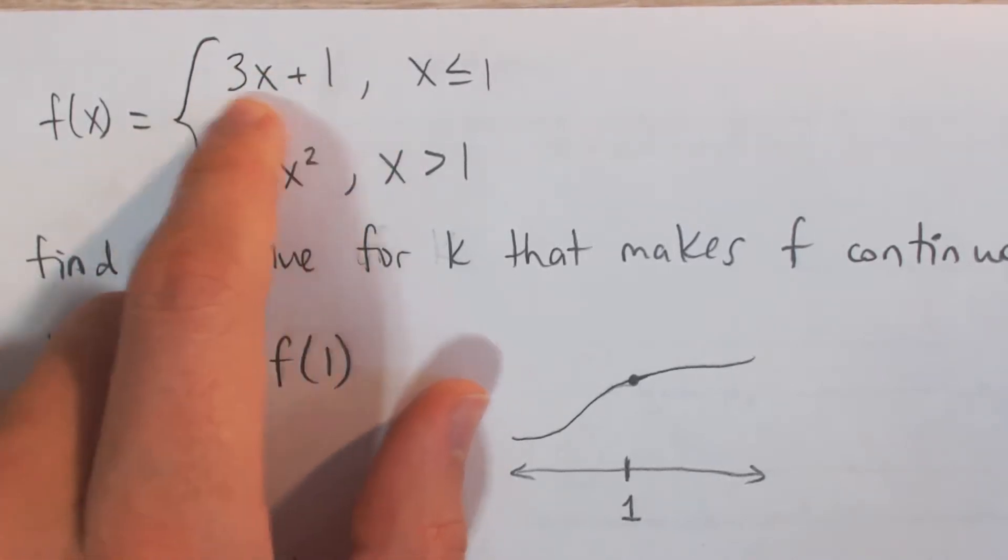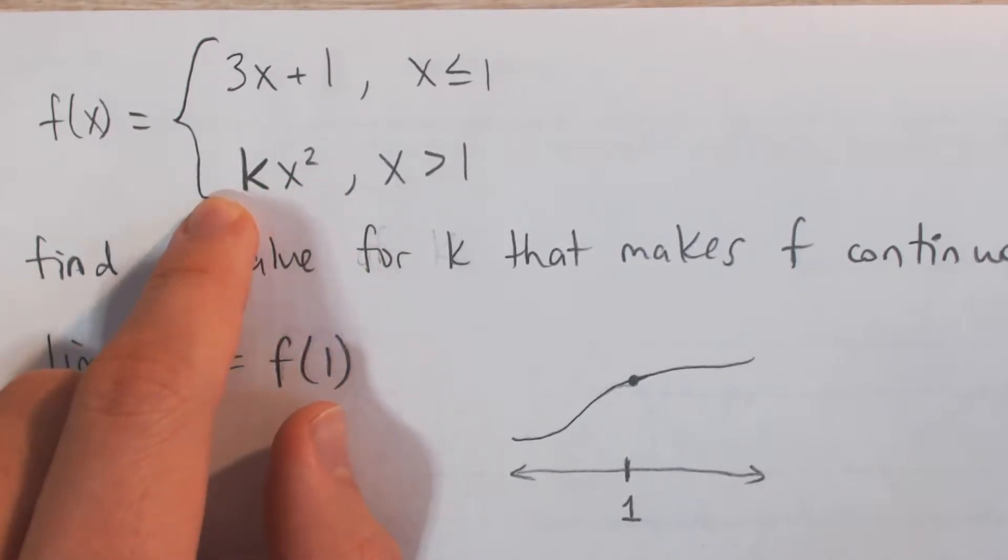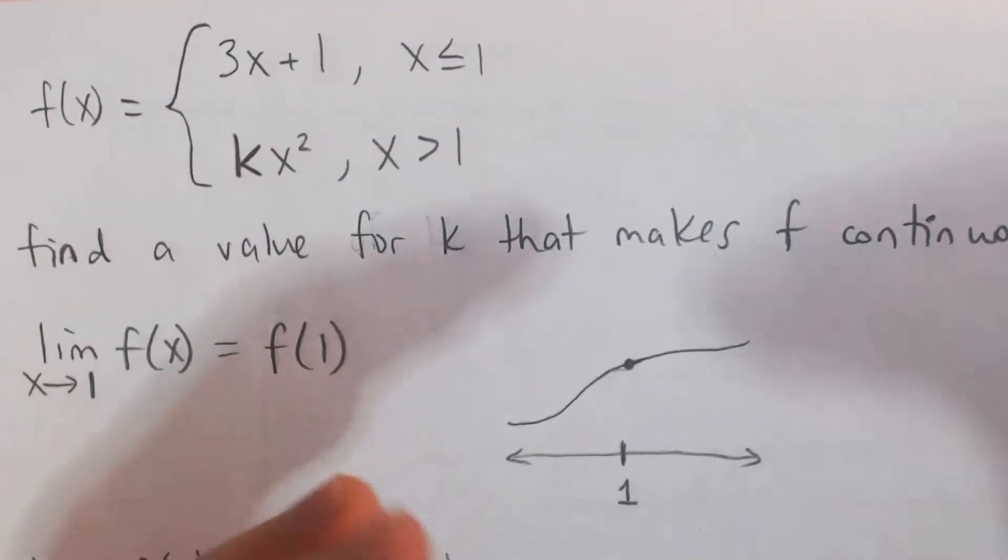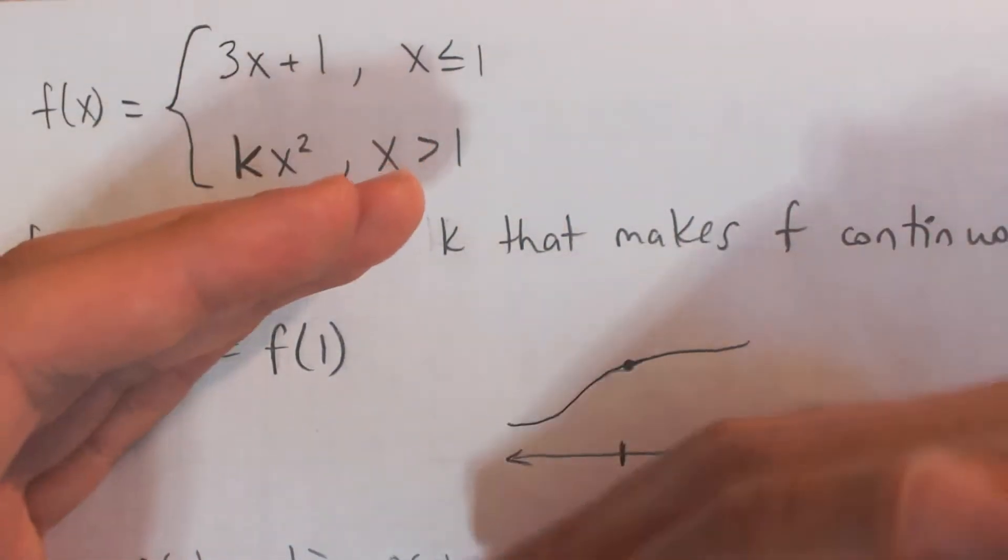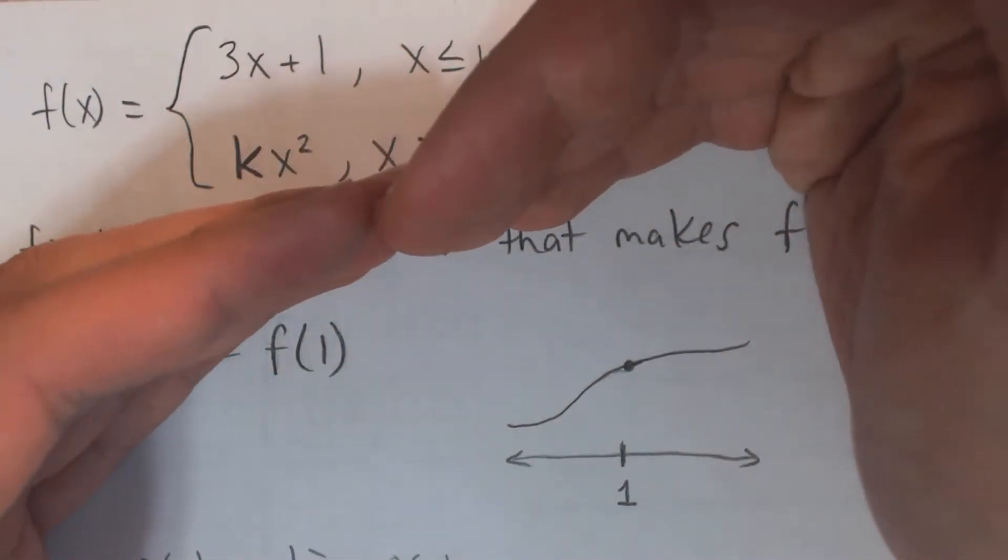Because each individual piece, linear terms are always continuous, quadratics are continuous, but at 1 where they meet, maybe the two pieces don't quite line up. And we want to find a value of k such that those pieces will line up and be continuous.